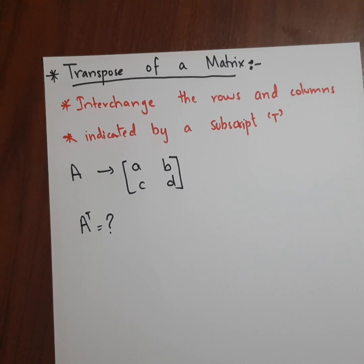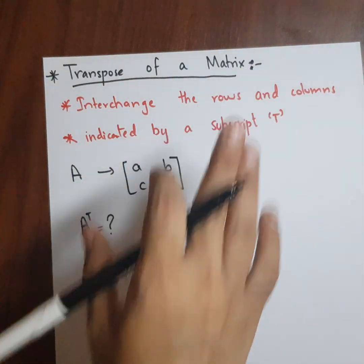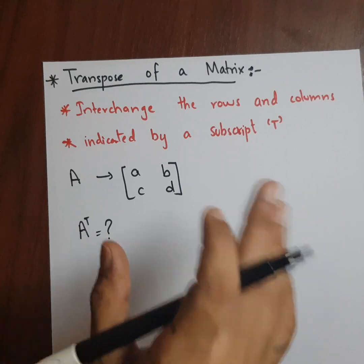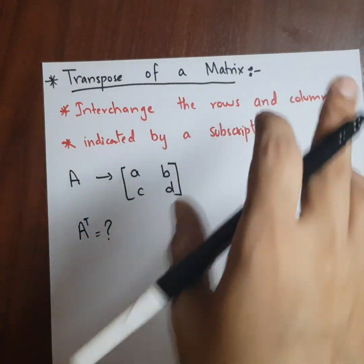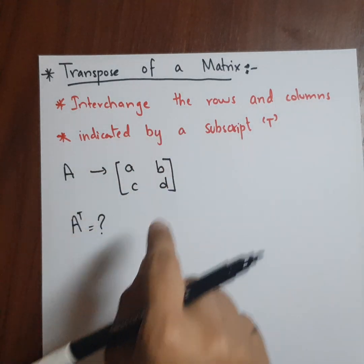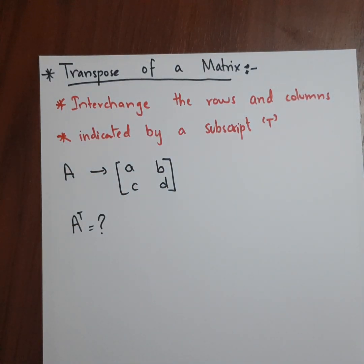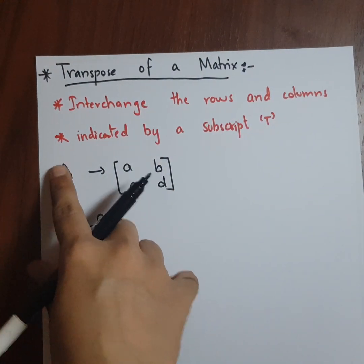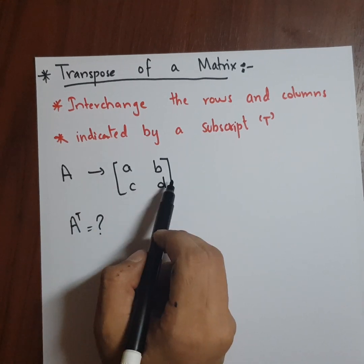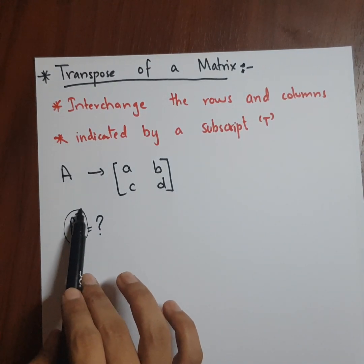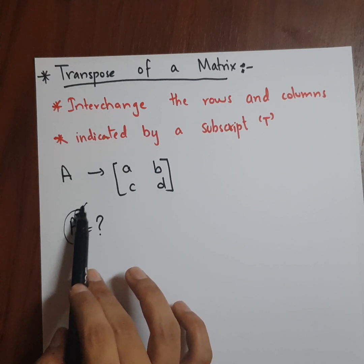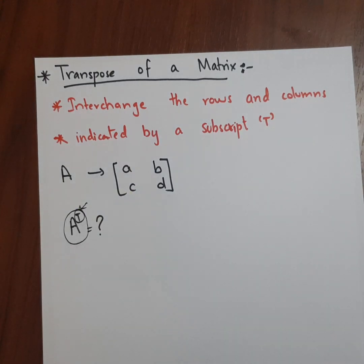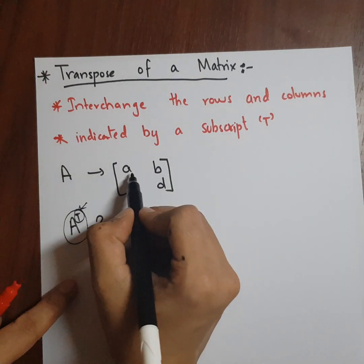They're not complicated, that's why I decided to make one video for both of them. First I'll talk about the transpose of a matrix. The transpose of a matrix basically means that we interchange the rows and columns. It is indicated by a subscript T on the matrix. So if you have a matrix A which is a, b, c, d and I want to show the transpose, I'll put a small subscript T. Now how will I find the transpose and what do I mean by interchange the rows and columns? Let's see this for this matrix.